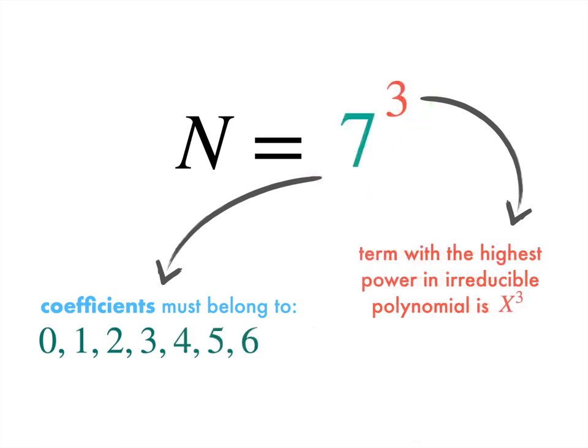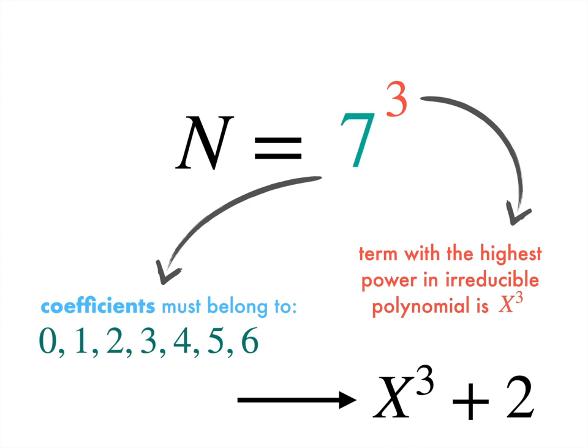So for instance, if n were 7 cubed, in other words, 343, we'd need to search for an irreducible polynomial with coefficients between 0 and 6, and with an x cubed but nothing higher. For instance, it turns out x cubed plus 2 is one such polynomial. Or if n were 4, as before, we only need 0s and 1s, and a maximum of x squared, which agrees with our previous example.